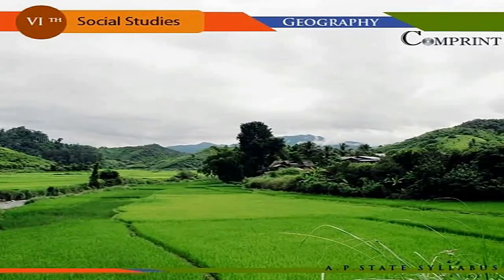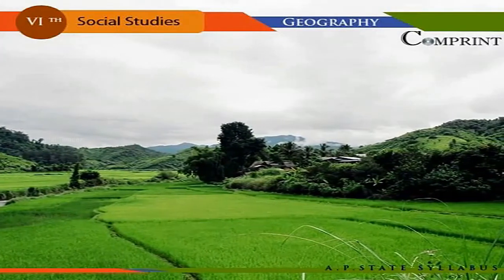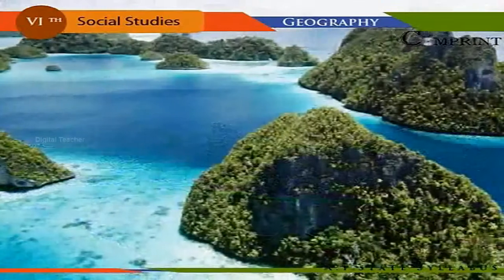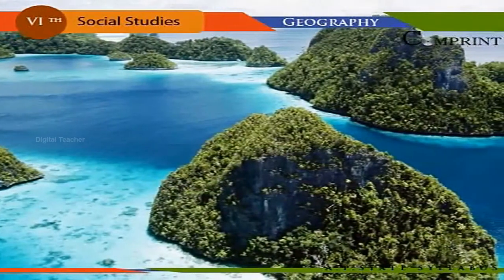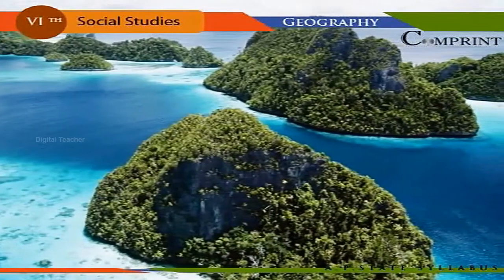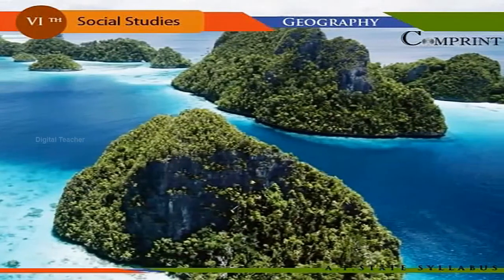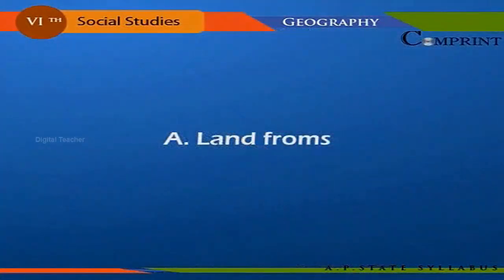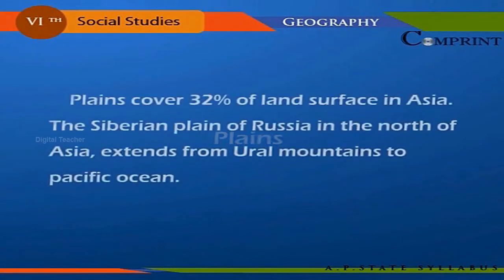Asia is the largest continent in the world, covering 30 percent of the land surface of the globe. The main landforms of Asia can be divided into plains, mountains, plateaus, and groups of islands. Plains cover 32 percent of the land surface in Asia. The Siberian plain of Russia in the north extends from the Ural Mountains to the Pacific Ocean.